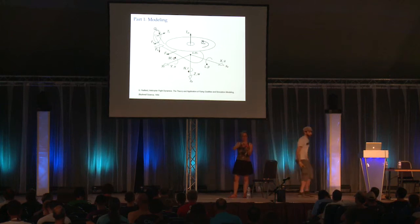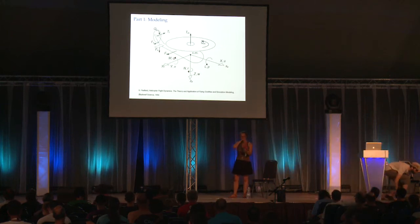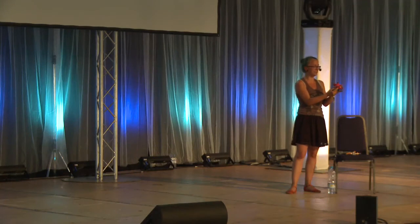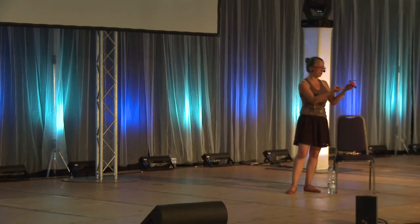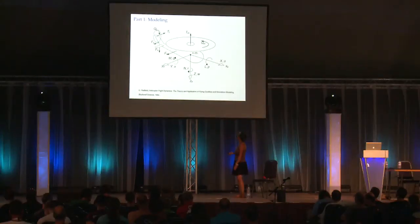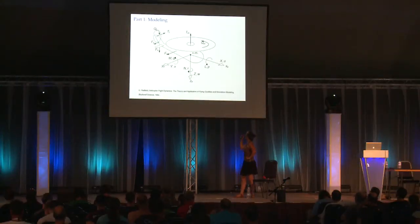You generate a thrust with the main rotor and tail rotor, as well as anti-torques with your rotors. It doesn't play a role how many rotors you have — you always generate a thrust. If you have three rotors, you generate it for all three.